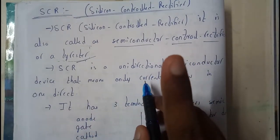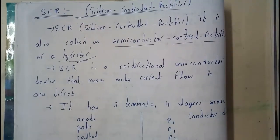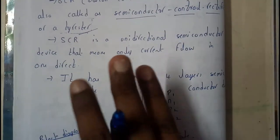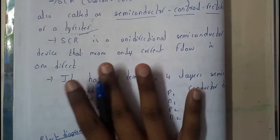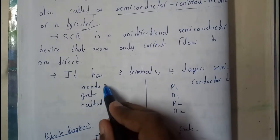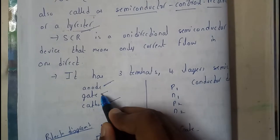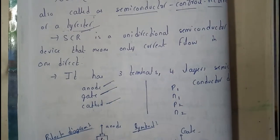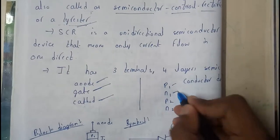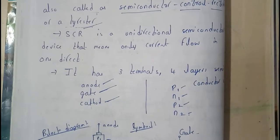It is unidirectional and current flows only in one direction. It has three terminals — anode, cathode, and gate — and four semiconducting layers. The four layers are arranged as P-N-P-N.